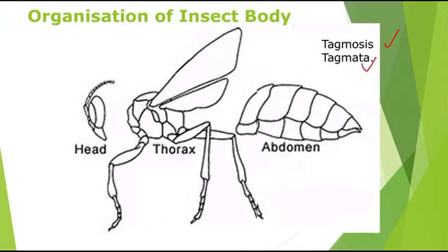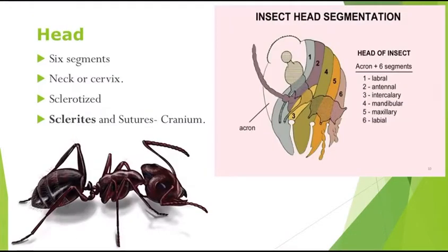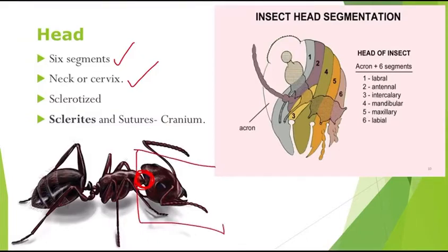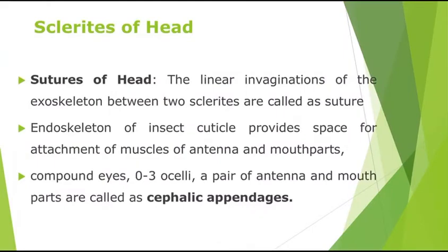We will now see each tagmata in detail, starting with the head. The head has six segments and is attached to the thorax by means of a small constriction called the neck or cervix. The head is always highly sclerotized and hard, and it has plates called sclerites — vertex, frons, clypeus, gena, and occiput — which are hard plate-like structures from which the head is formed.